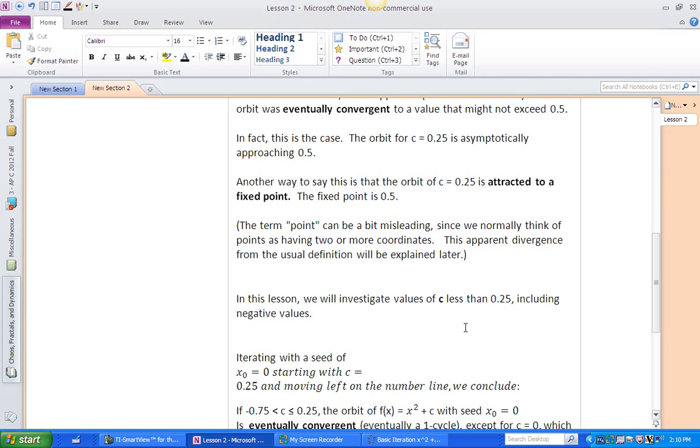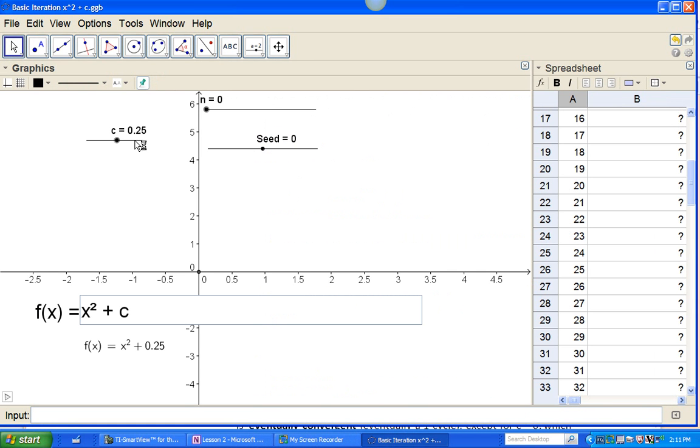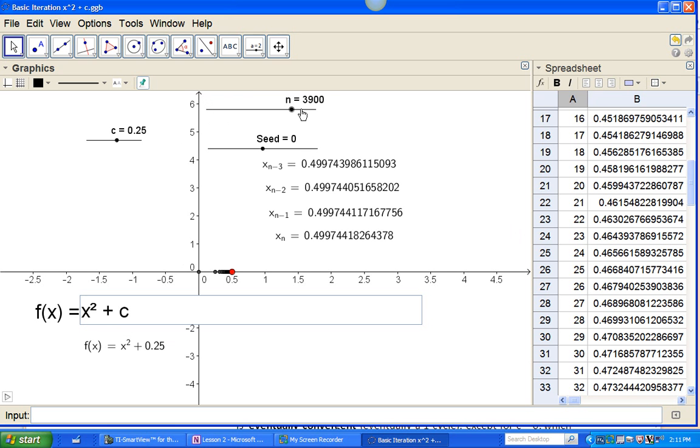Okay, so in this lesson, we're going to look at values of C less than 0.25, and we're also going to look at negative values. Remember, we're always going to iterate with a seed of x0 equals 0, and now we're going to start with C equals 0.25. So here we go back to our basic iteration program. C is 0.25, our seed x0 is 0, x squared plus C. We've got the function down here with the value of C plugged in, and we do a lot of iterations, and now we've got it up to where you can do 5,000 iterations, and we can see it is settling down.